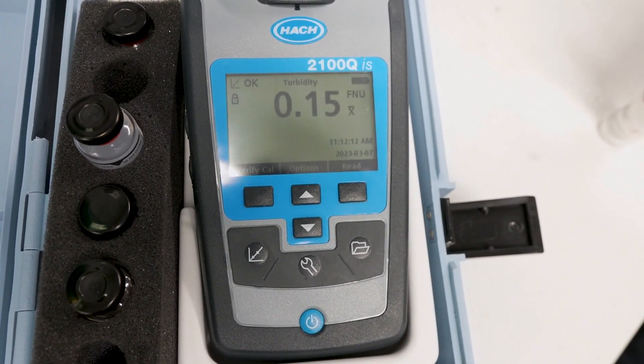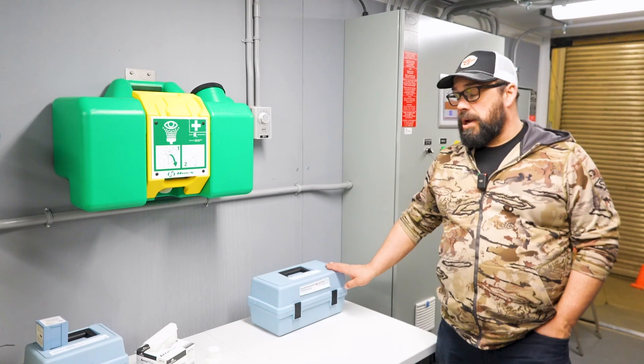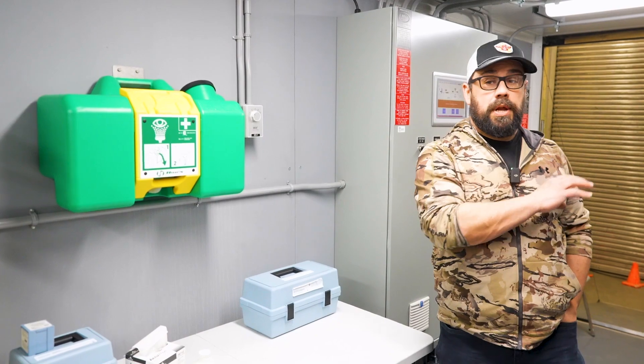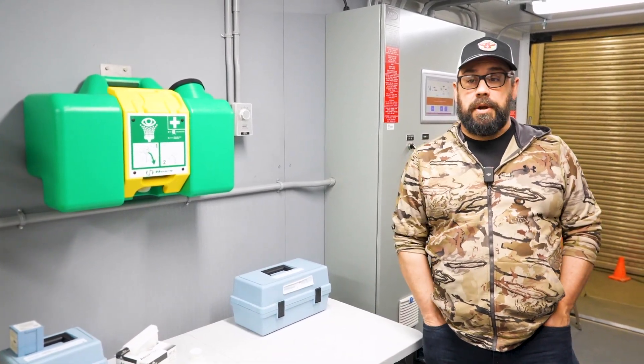You want to make sure you calibrate your handhelds at least once a month, because you're going to use these tools to calibrate your online turbidity meter and chlorine analyzer.